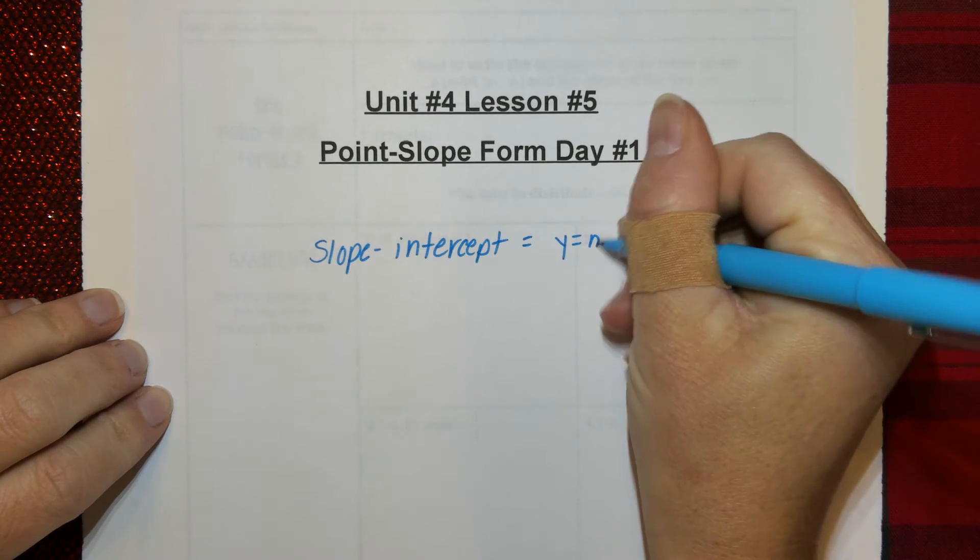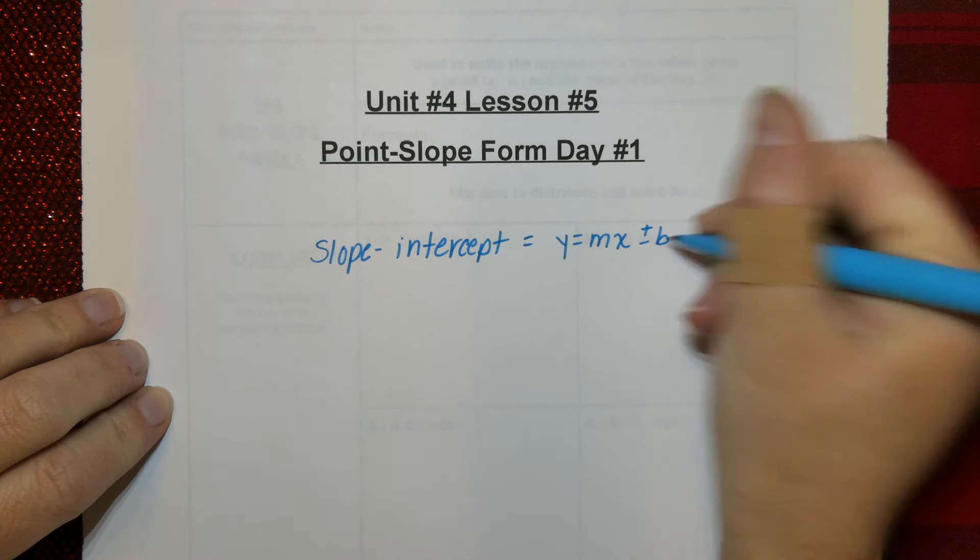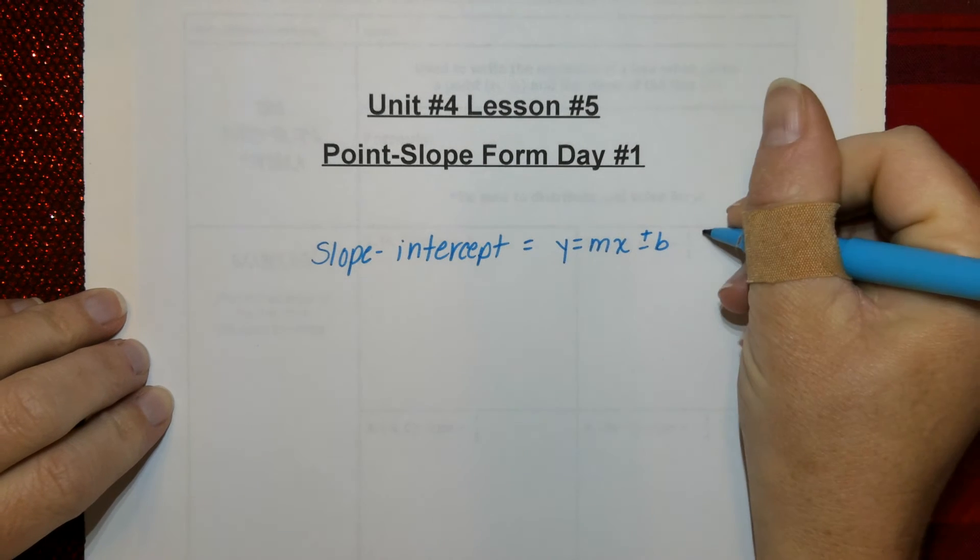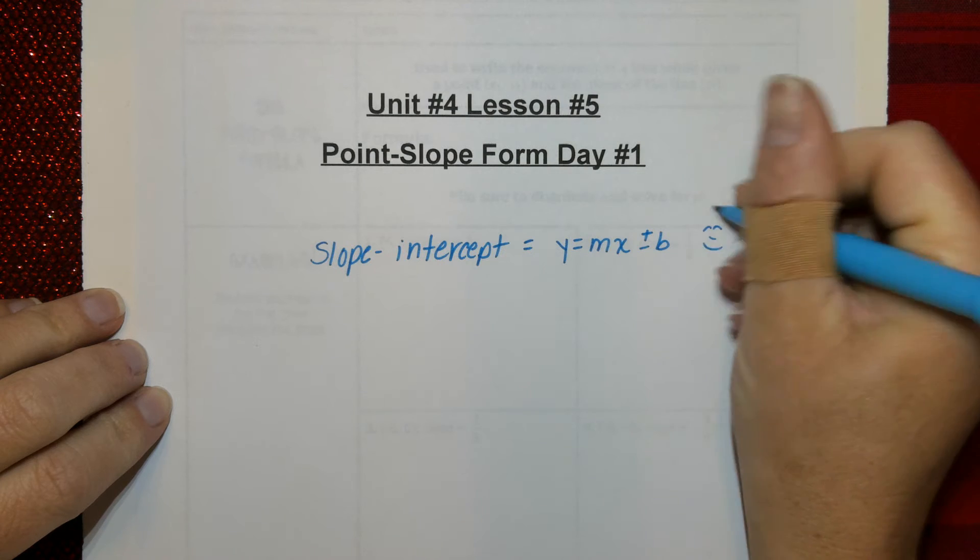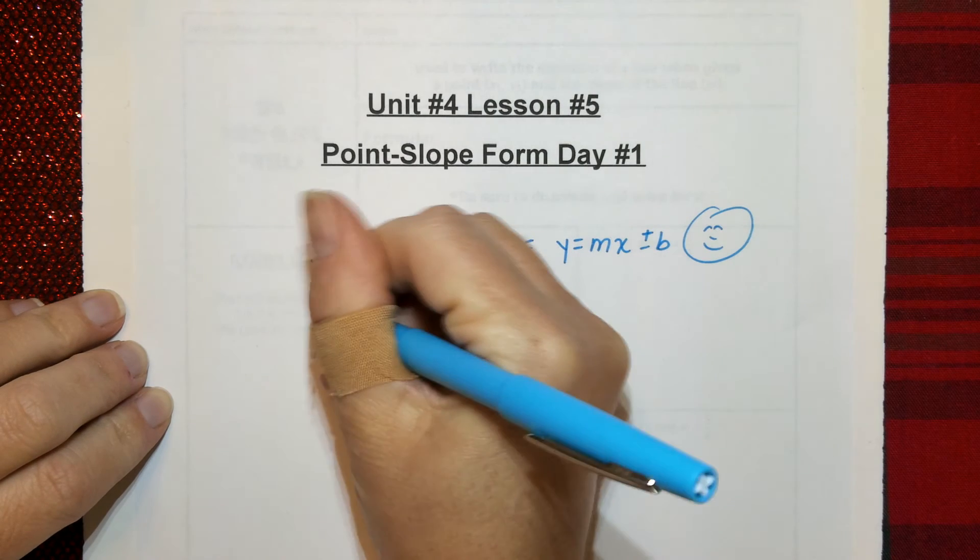Slope intercept form, if you remember, is this: Y equals MX plus or minus B. And this is really our favorite form. We like that one best.